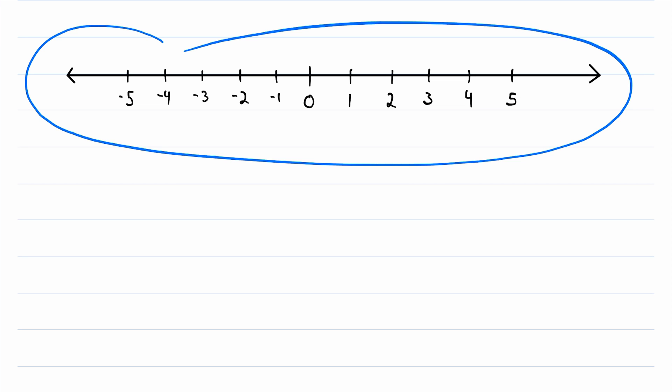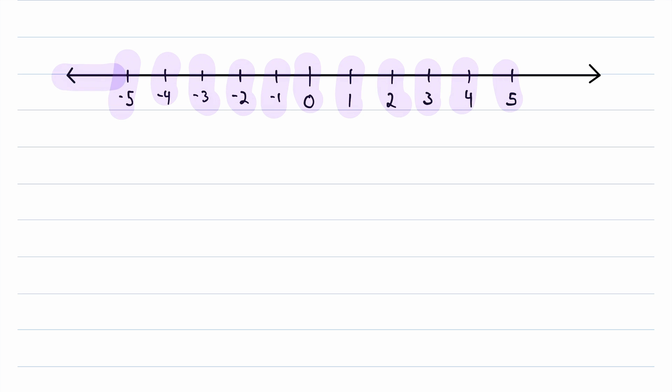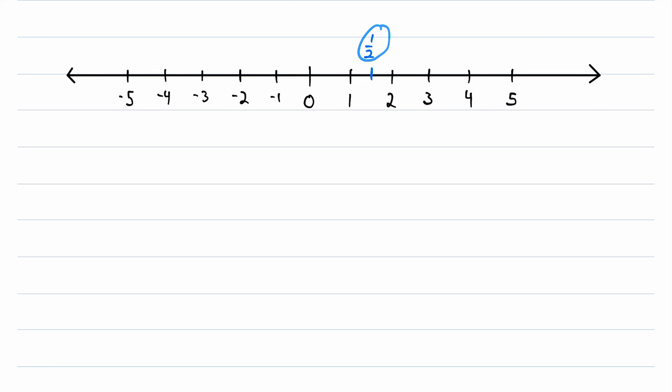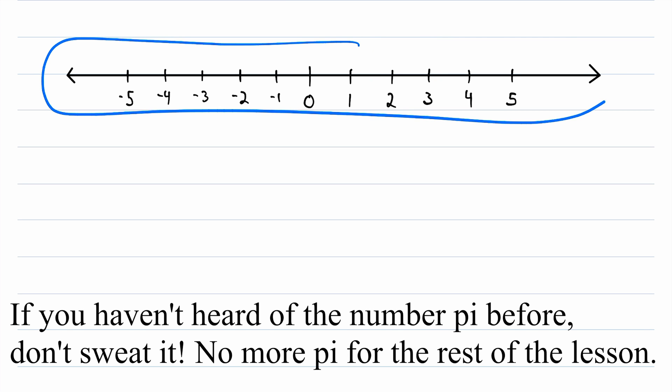So here we have the real number line. We've got our negative integers, we've got zero, and some positive integers. Of course, it goes on infinitely in the negative and the positive directions. And again, this is the real number line, so it includes rational numbers like 1/2, and it includes irrational numbers like pi. All the real numbers are here.